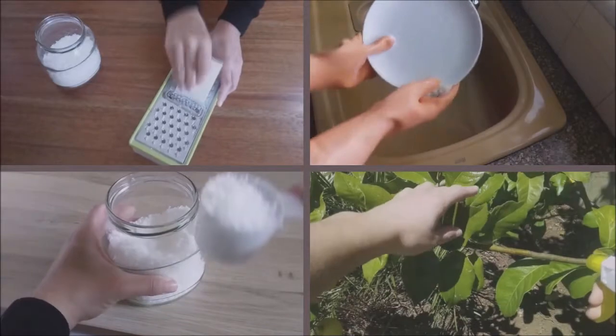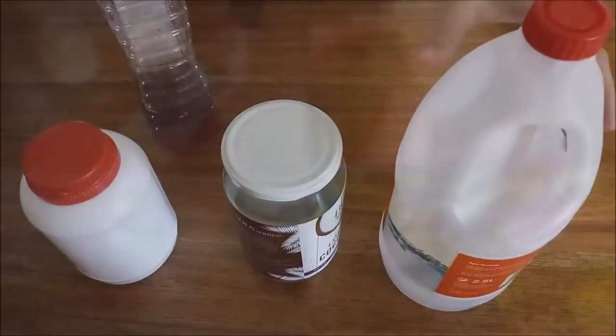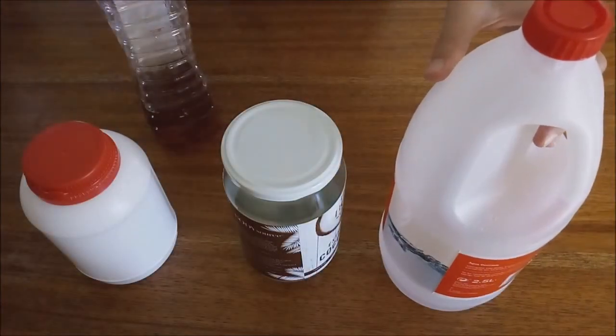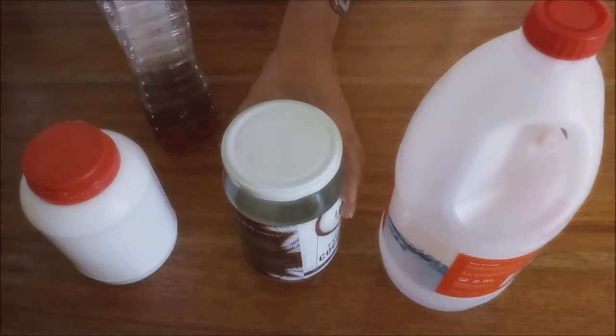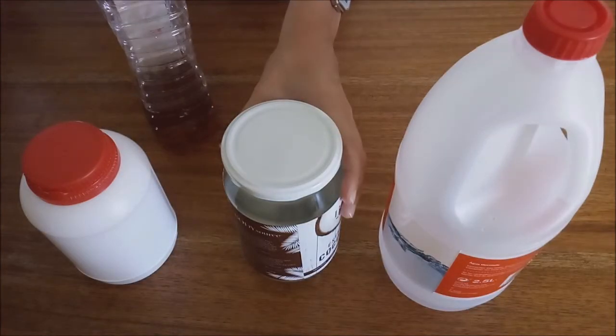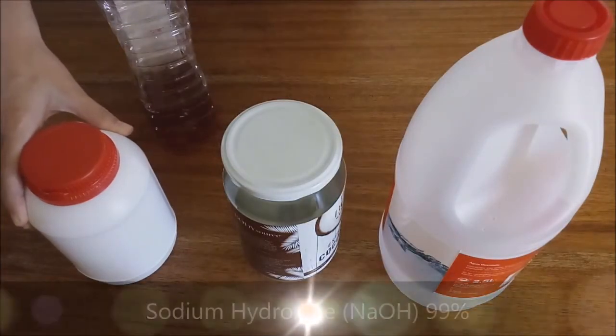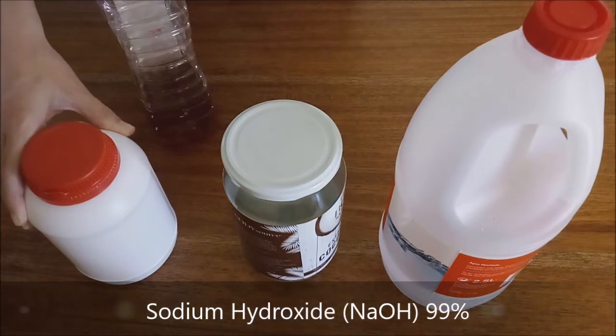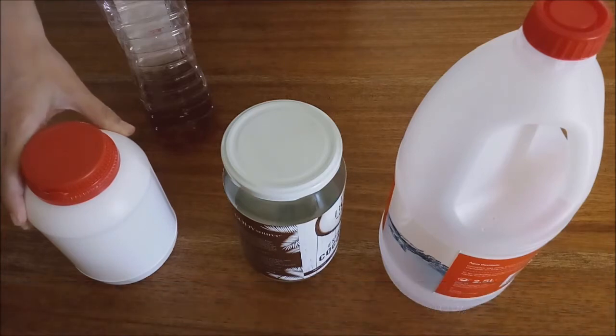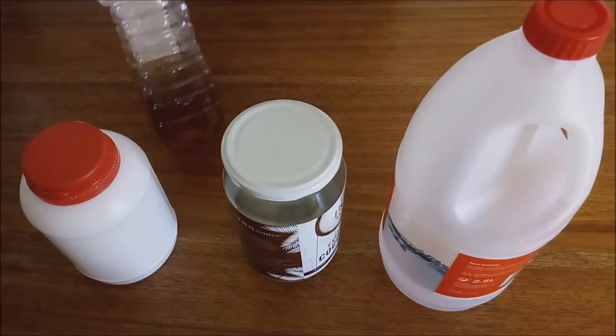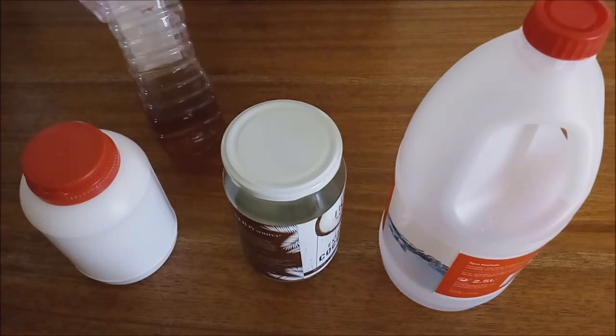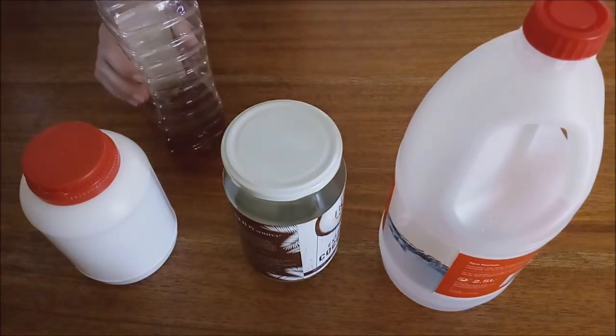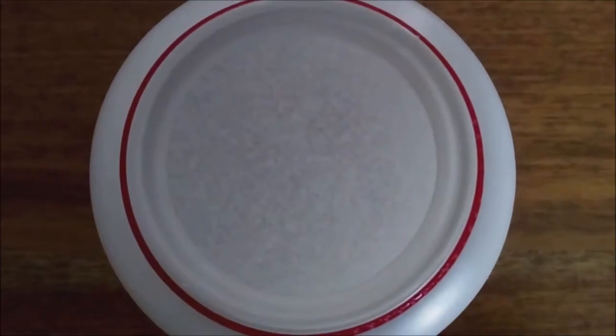To make this soap the necessary ingredients are distilled water, coconut oil, and caustic soda, in this case 99% pure sodium hydroxide. It is important to have vinegar at hand because in case of spillage the vinegar stops the action of soda. Due to the handling of caustic soda, special care must be taken.